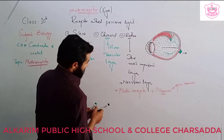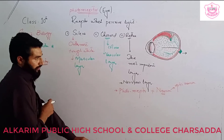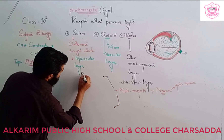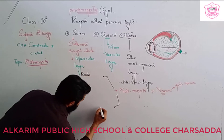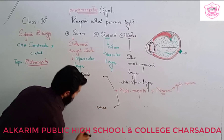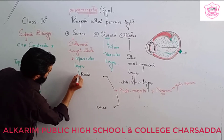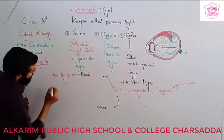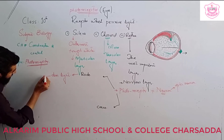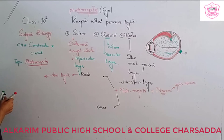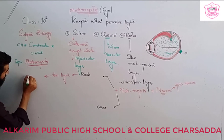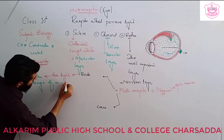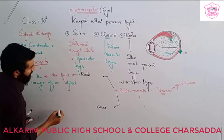Photoreceptors receive light. There are two types of photoreceptor cells: rods and cones. Rods pursue dim light and give the image of an object, but without color — they produce an image of an object without color.